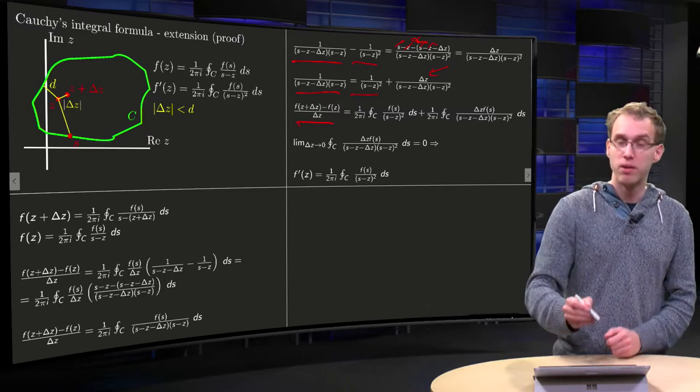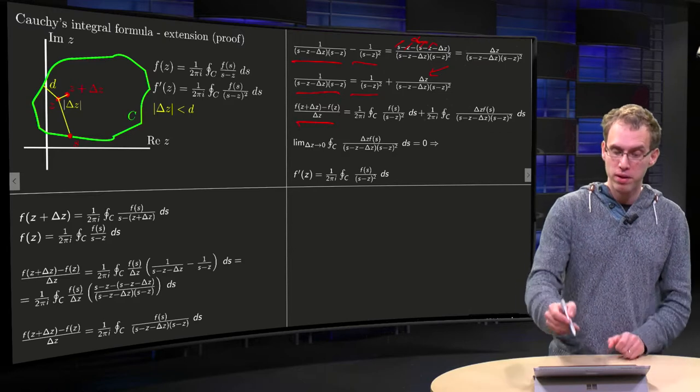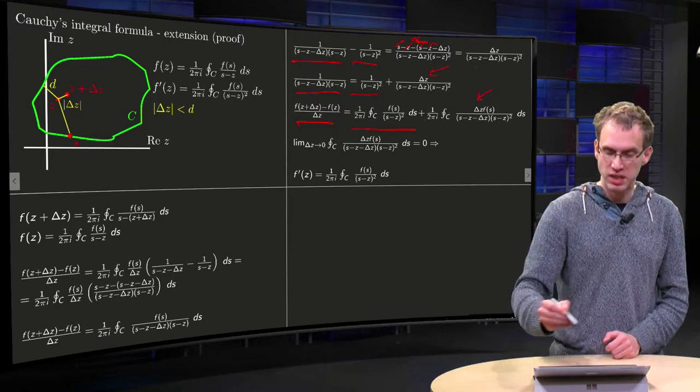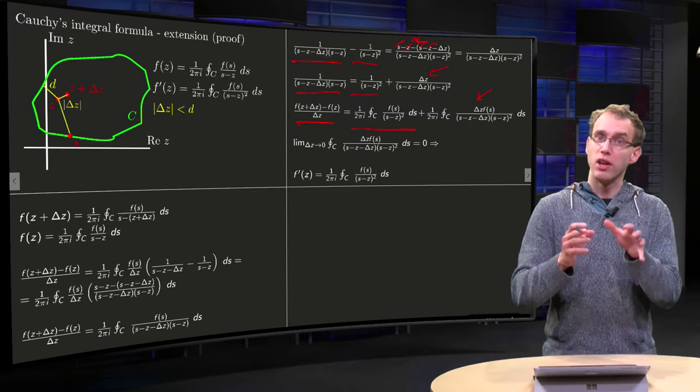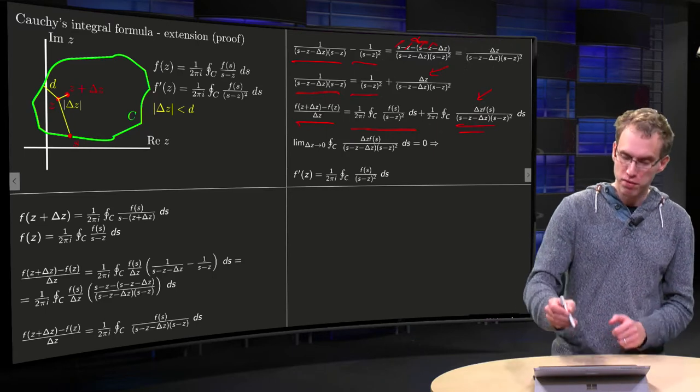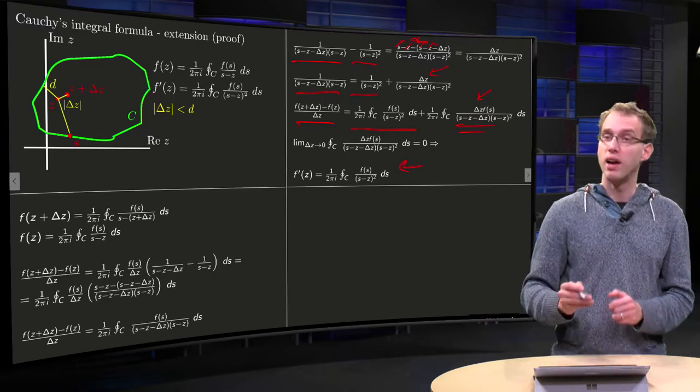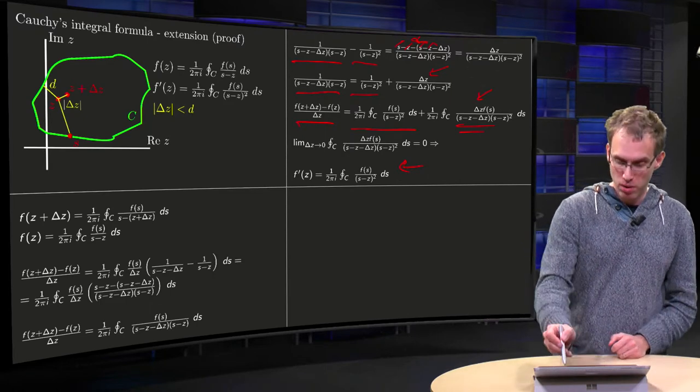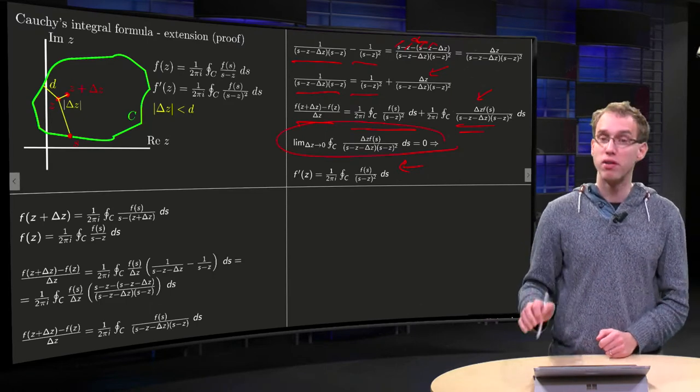So your function, which will become f', will be what you want, plus some other term with this delta z in the numerator. Now the last step is to show that if you take delta z to zero, that this integral equals zero, which means that f' of z is given by the extended version of Cauchy's integral formula. So only left to prove is this limit over here.